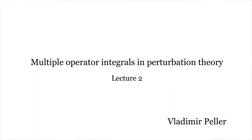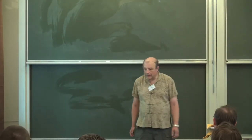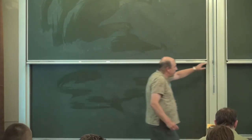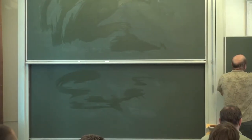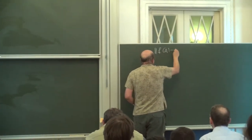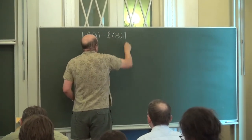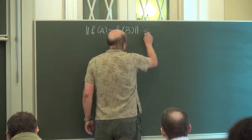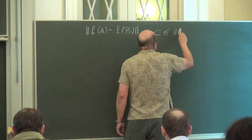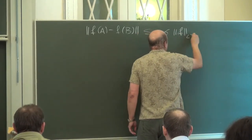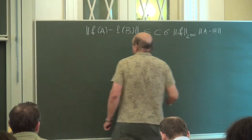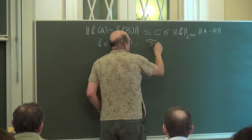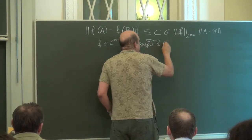Let me continue. Last time I gave an introduction to double operator integrals and let me remind the following estimate that is very important for many inequalities: if A and B are self-adjoint operators, then we have the following inequality, where f is an L-infinity function on the real line and the Fourier transform is supported in the interval minus sigma, sigma.